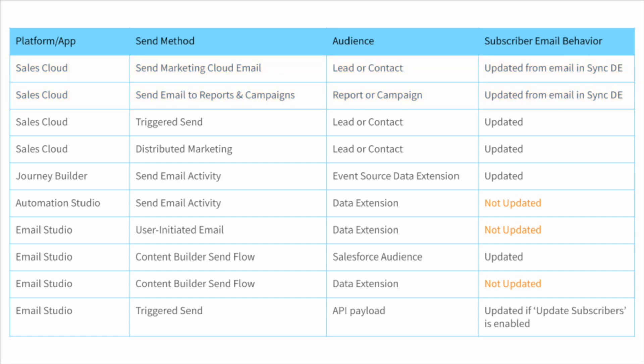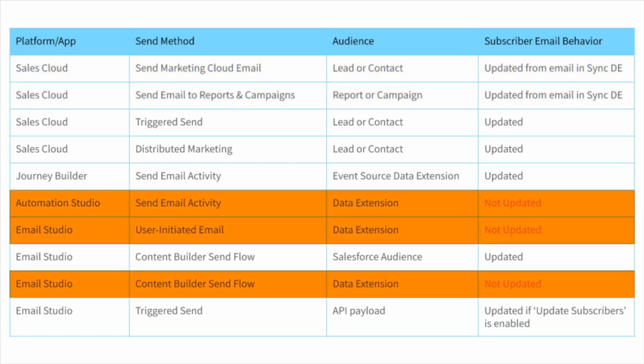For data extension-based sends, the email address used to send an email to a subscriber will not be updated based on the value of your email address field in your data extension. That's because by default, this email address is only used when creating a new subscriber record at send time. If your sendable data extension contains different email addresses for subscribers who exist in the All Subscribers list, then you should consider sending the email from a journey.